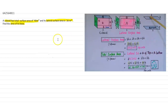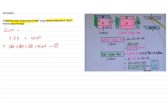Now we are going to write down the given parts. Given: the total surface area of a cuboid is 40 metre square, that is 2lb + 2bh + 2lh = 40 metre square. This is our equation number one.